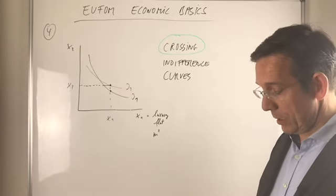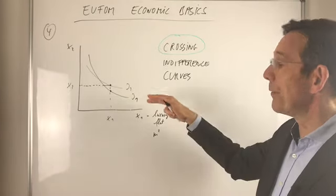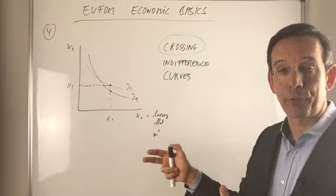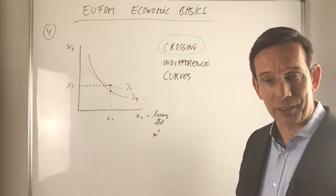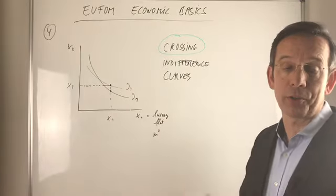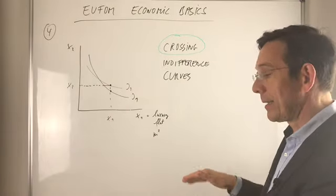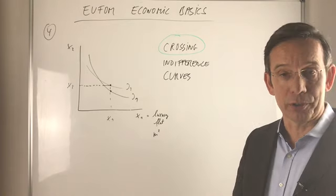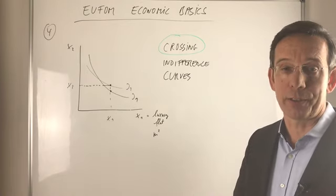However, what is possible is that you have different indifference curves for different households. We saw before that we have on one hand a steep indifference curve for one household type, and a flat indifference curve for another household type with different preferences. So that's possible.